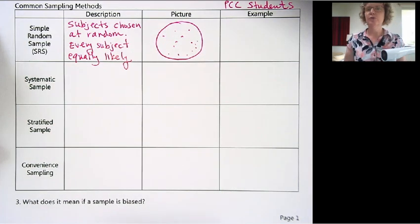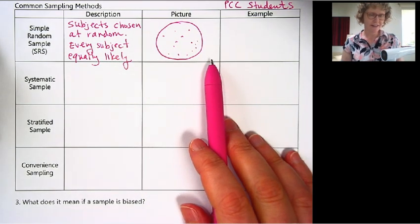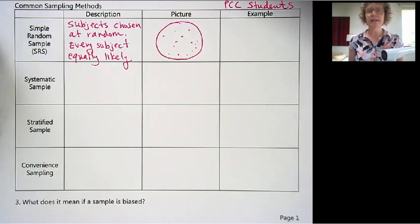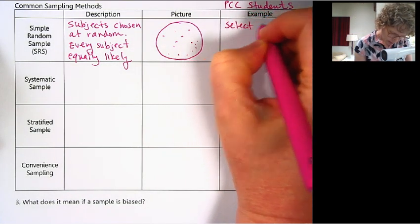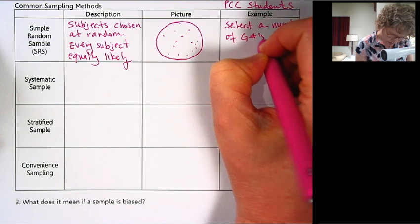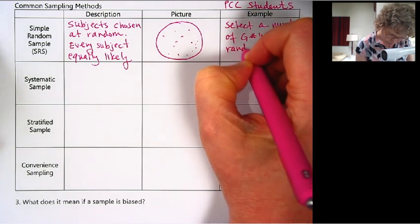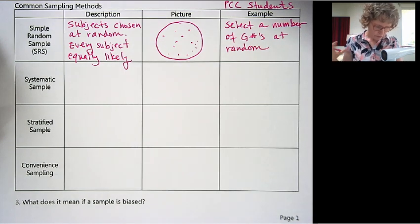If you drew names out of a hat, that would be a simple random sample. It might be you'd need a pretty large hat to draw names out of a hat for PCC. So one example, one thing we could do is use G numbers. Everyone has a G number. And so we could use a computer program to randomly select a certain number of G numbers at random using a random number generator. So that's a simple random sample. We just grab a random sample of people.